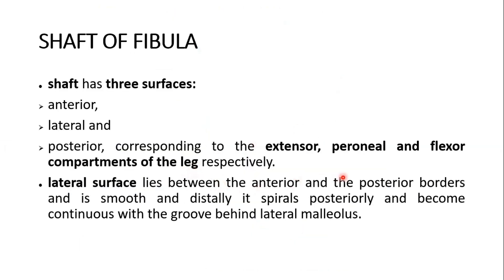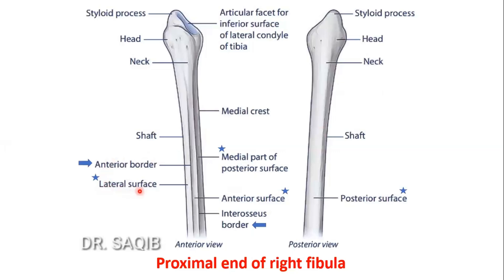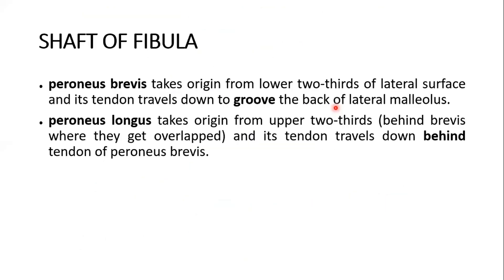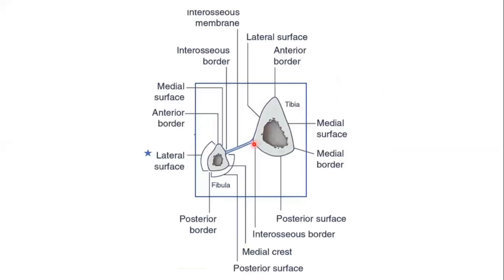The lateral surface lies between the anterior and posterior borders, is smooth, and distally spirals posteriorly to become continuous with the groove behind the lateral malleolus. You can see this lying between the anterior and the posterior borders. Here you can see more clearly — this is the lateral surface, this is the posterior border, this is the anterior border, this is the interosseous border of the fibula, and this is the medial surface. And this is the posterior surface.